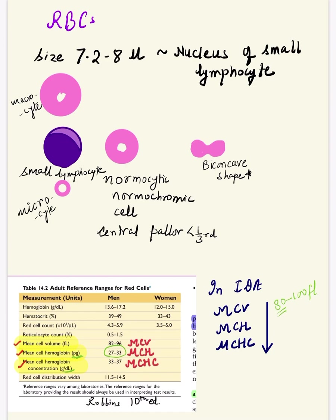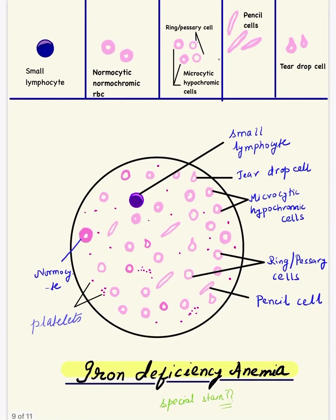All three indices — MCV, MCH, and MCHC — are decreased in IDA. Iron deficiency anemia is the most common nutritional anemia, especially in developing countries. Iron is required to synthesize hemoglobin in developing RBCs, so when it is deficient, it leads to iron deficiency anemia.